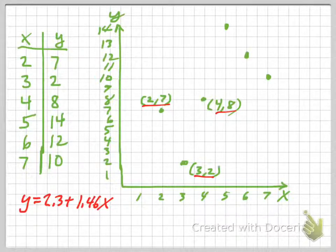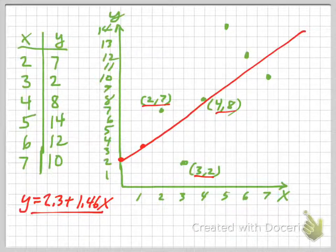So if x is equal to 0, y is equal to 2.3. So my first point on the line is right here. If x is equal to 1, y is equal to 3.76. So 3.76 is about here. So those are 2 points that are on my regression line. This is my regression line that I've estimated.